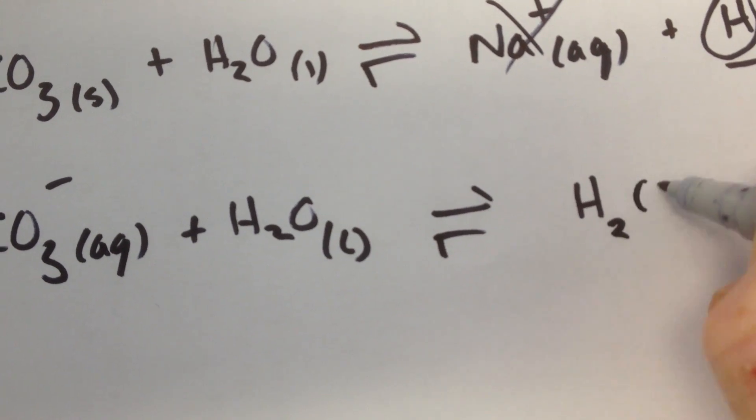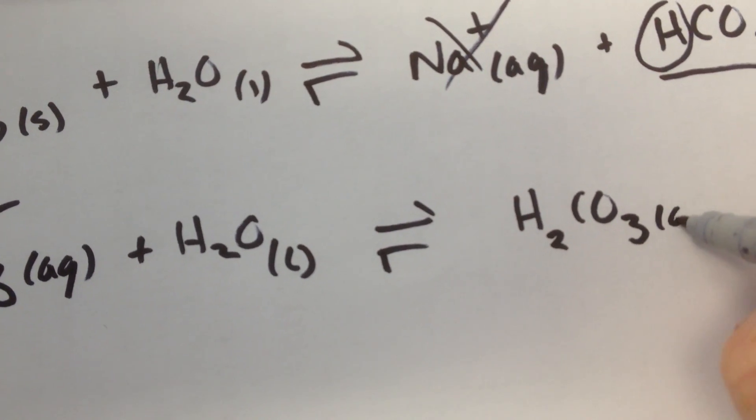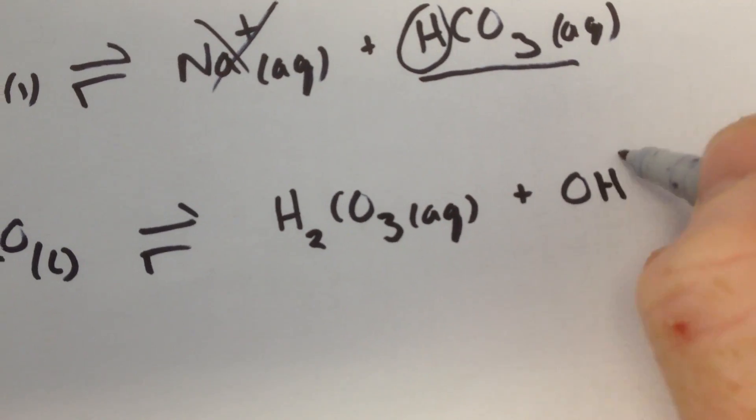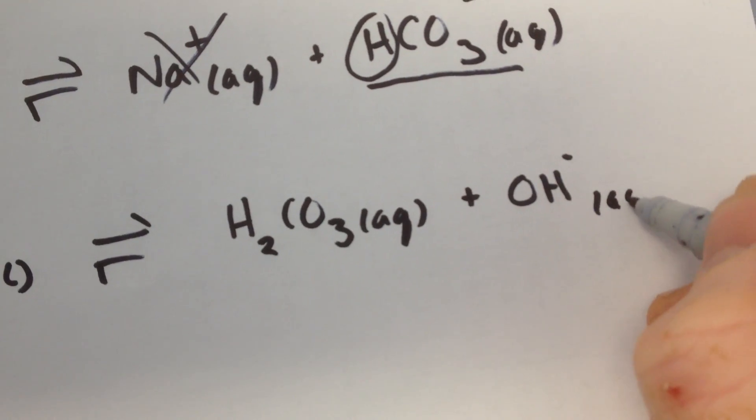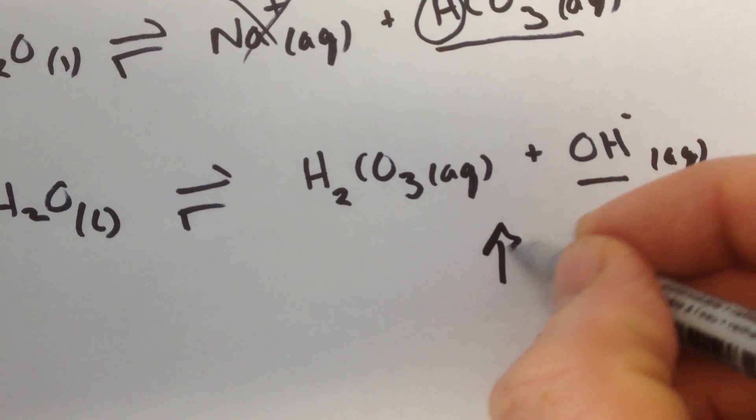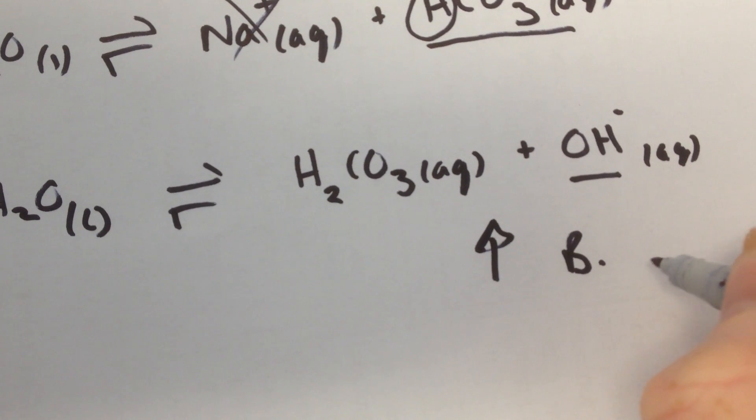So now I have H₂CO₃ in solution and I've left behind hydroxide in solution. Therefore, because of the presence of OH⁻, pH climbs and we say it's a basic salt.